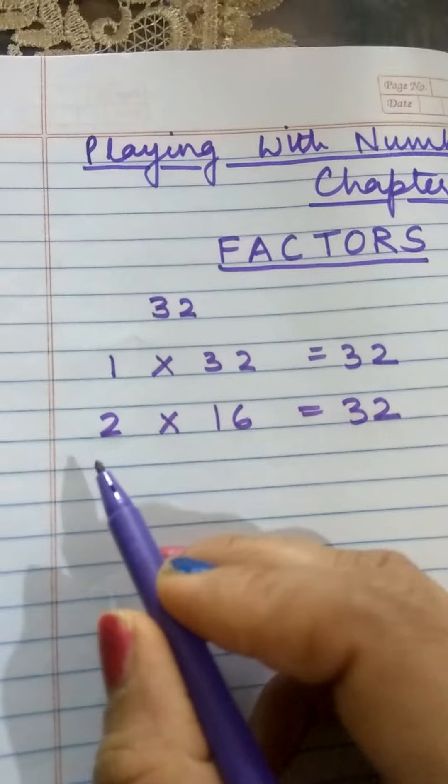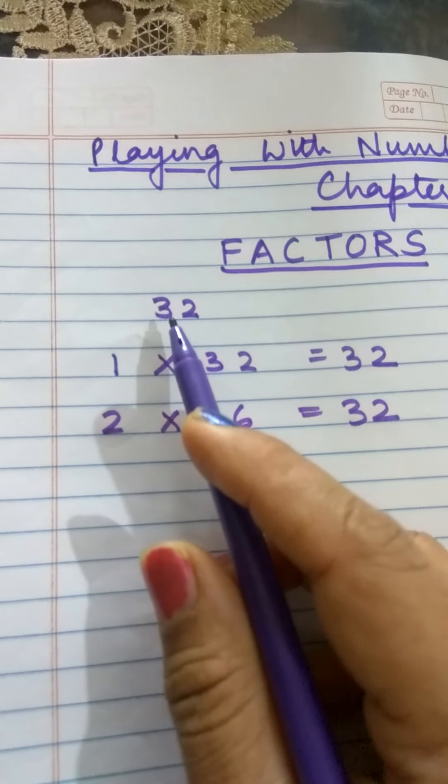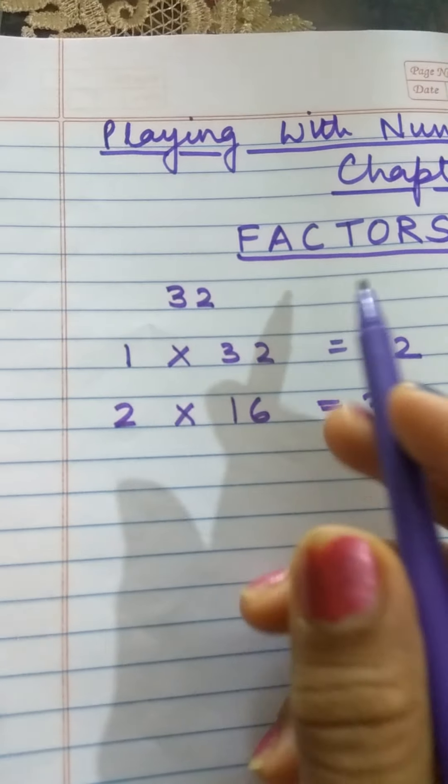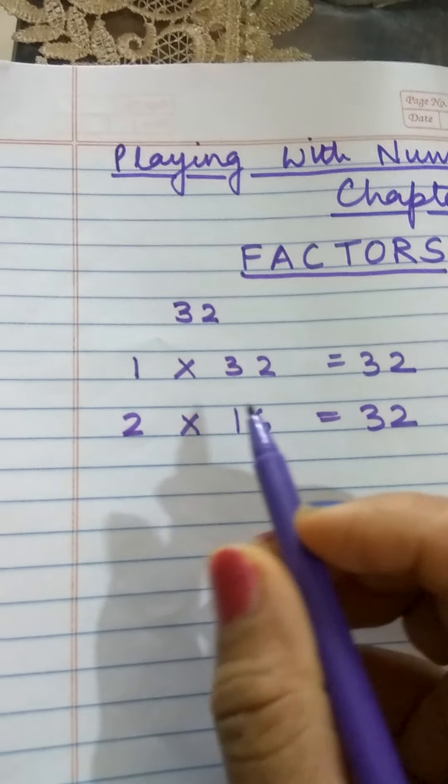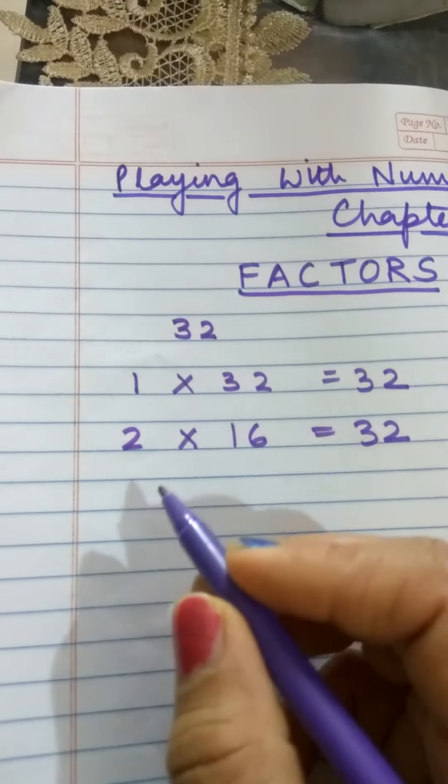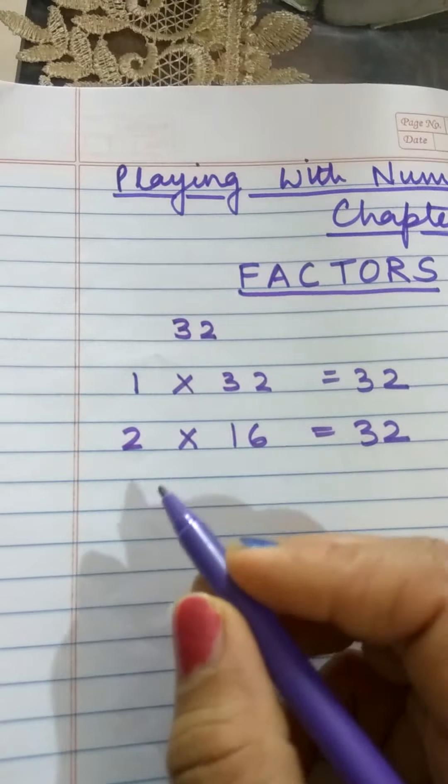Then let me try 3. But when we try 3, by divisibility rule we know that 3 plus 2 is 5. So 32 is not divided by 3. So we cannot take 3. Then we try 4. 4 into 8 gives me 32.